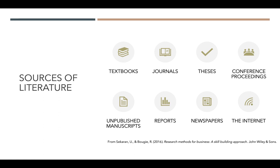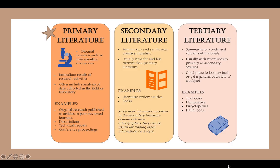There are many sources of literature. You can gain literature from textbooks, journals, theses, conference proceedings, unpublished manuscripts, reports, newspapers — basically the internet. Literature can come from various sources, and they are actually divided into three tiers: primary, secondary, and tertiary.